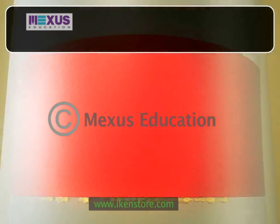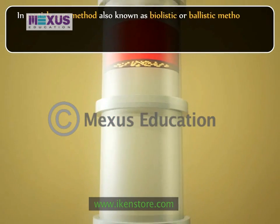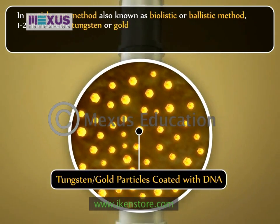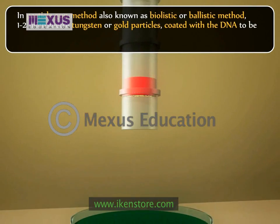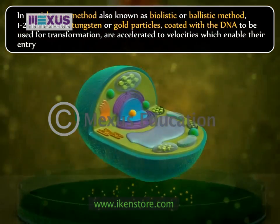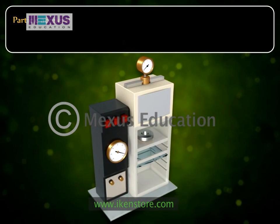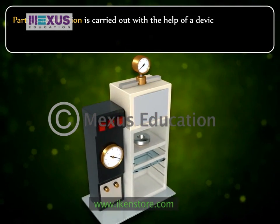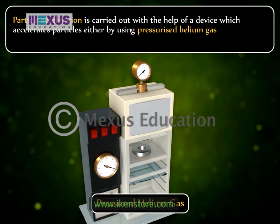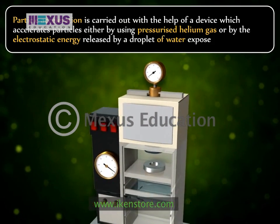The third method is the particle gun method, also known as the biolistic or ballistic method of DNA delivery. In this method, 1 to 2 micrometer tungsten or gold particles coated with the DNA to be used for transformation are accelerated to velocities which enable their entry into plant cells. Particle acceleration is carried out with a device using either pressurized helium gas or electrostatic energy released by a droplet of water exposed to high voltage.